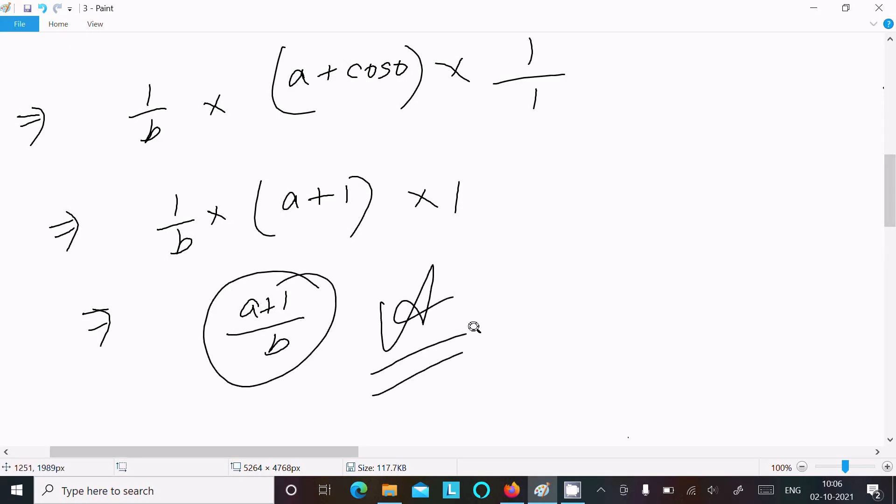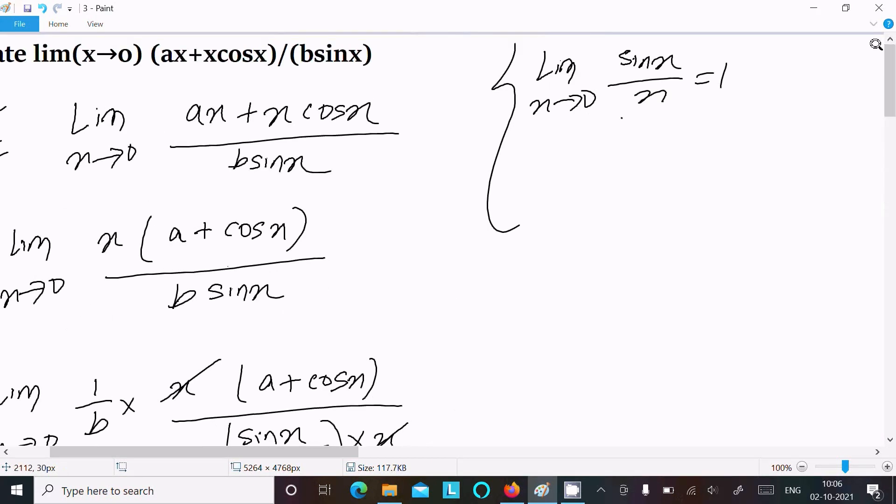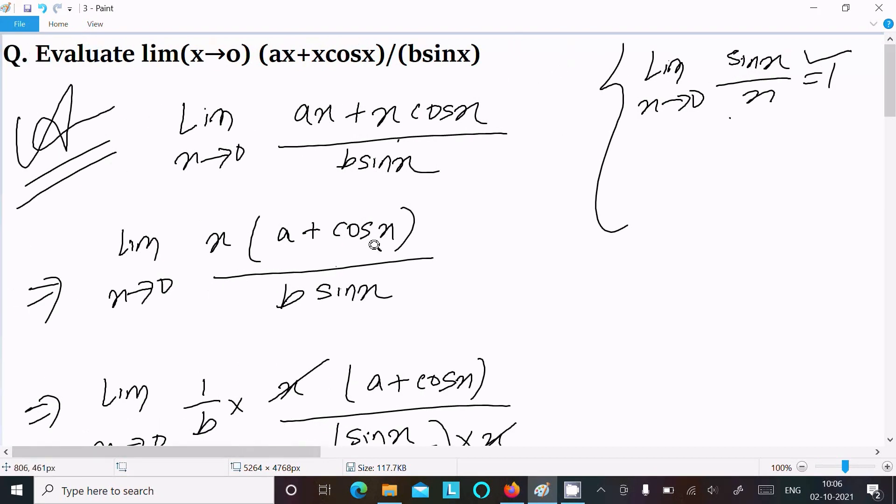To recap: use the formula lim(sin x/x) = 1, factor out x as common, and simplify to get (a + 1)/b.